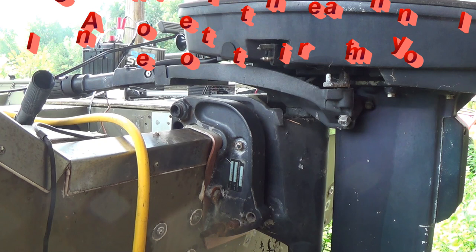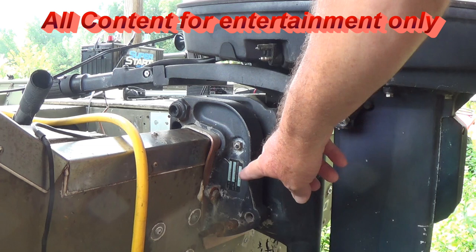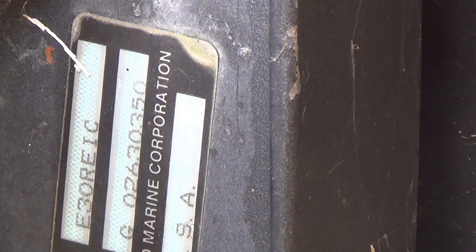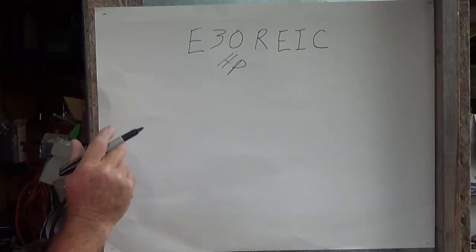First of all, right here on the transom you can see where the model number plate is, and it's right here. Right there is mine - you can see the model number is E30RELC. So let's check it out.